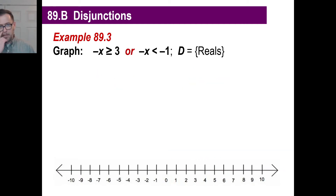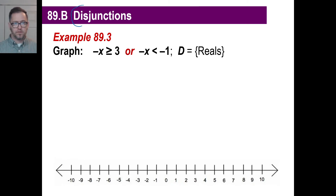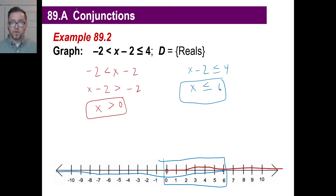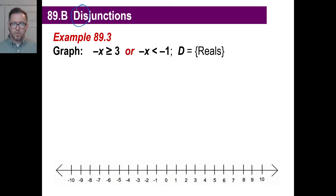Here's another one. This is called a disjunction — this is not a conjunction. It can be either one. So we're going to have a graph with two chunks to it. Instead of saying the answer is where they meet, we're going to have a graph with two different answers.